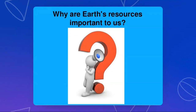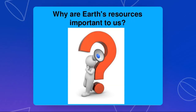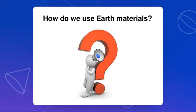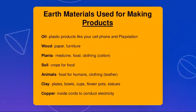I have some questions that I want you to think about. When we talk about Earth's resources, why do you feel Earth's resources are important to us? How do we use Earth's material, and how are we supposed to be using it? Earth's materials are used for making products — for example, oil, wood, plants, soil, animals, clay, and copper are Earth's materials we usually use when trying to make a product.